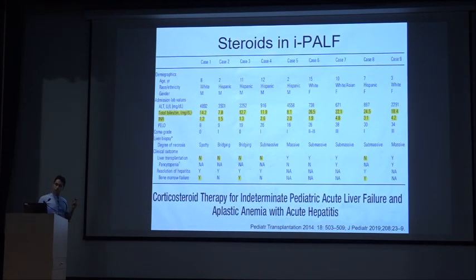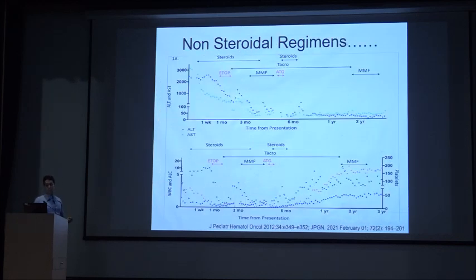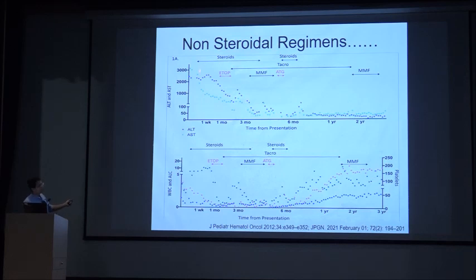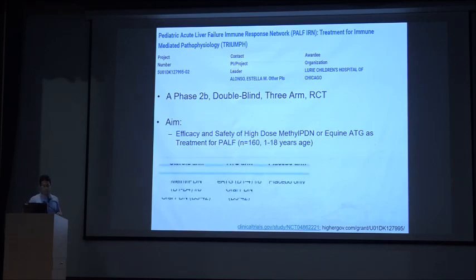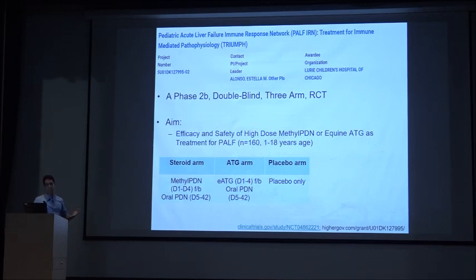To improve survival, steroids have been used with mixed benefit. Non-steroidal regimens including ATG have been used, predominantly in patients presenting with aplastic anemia, where WBC counts improved and liver failure resolved. The current PALF study group trial is a double-blind, three-arm RCT comparing methylprednisolone versus ATG versus supportive treatment in indeterminate ALF. The trial is ongoing — target enrollment is 160 patients, still in early twenties, expected to take three to four more years — with primary outcome of survival at day 21.